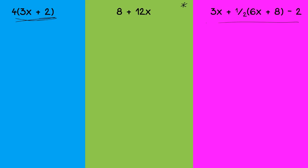So let's start with the simple one first. We have 4 times the quantity 3x plus 2. I know the distributive property allows me to distribute that multiplication to be 4 times 3x plus 4 times 2. When I do that multiplication, I have 4 times 3 is 12, so 12x plus 4 times 2 is 8.